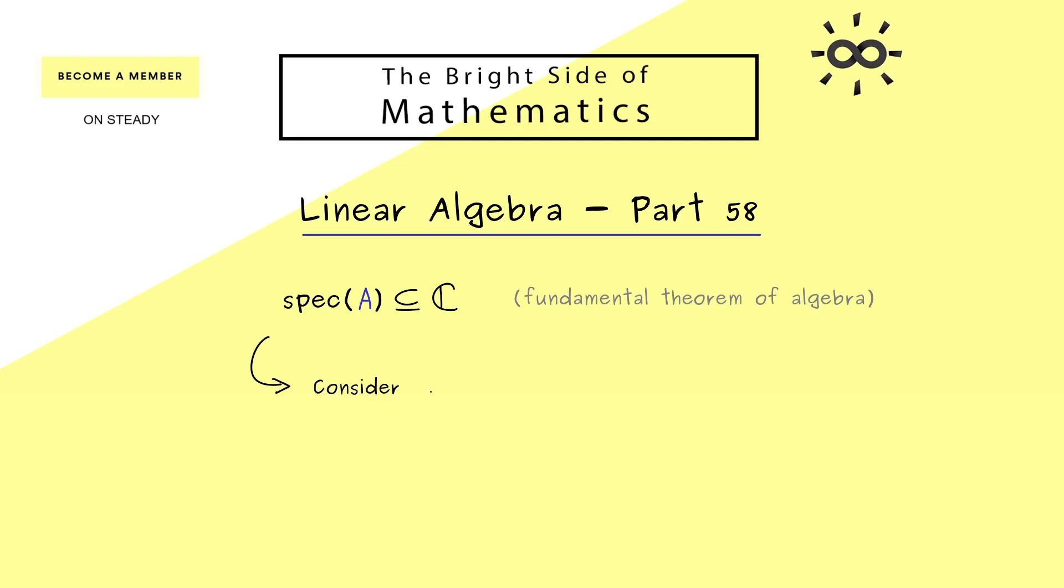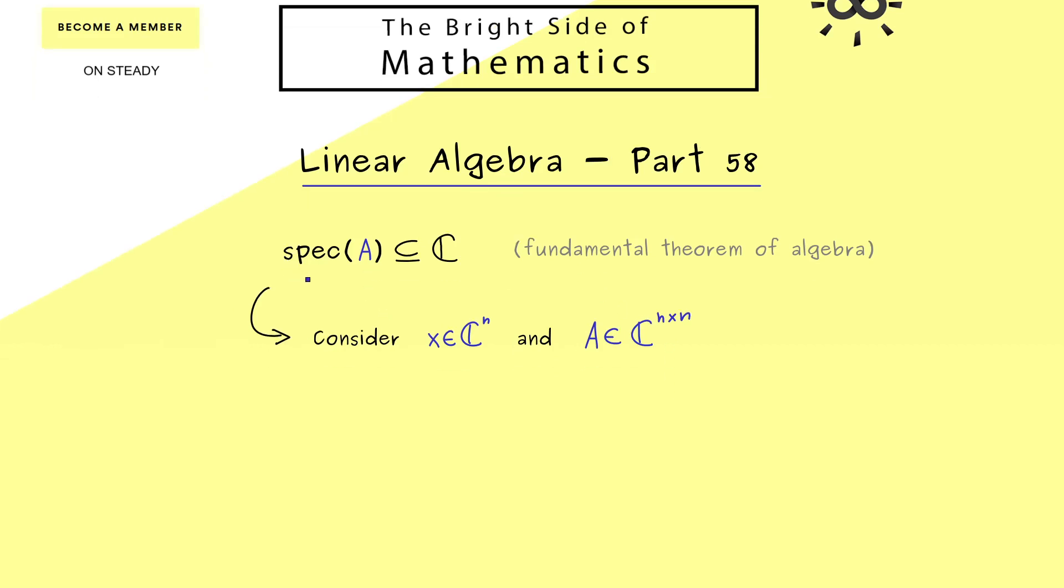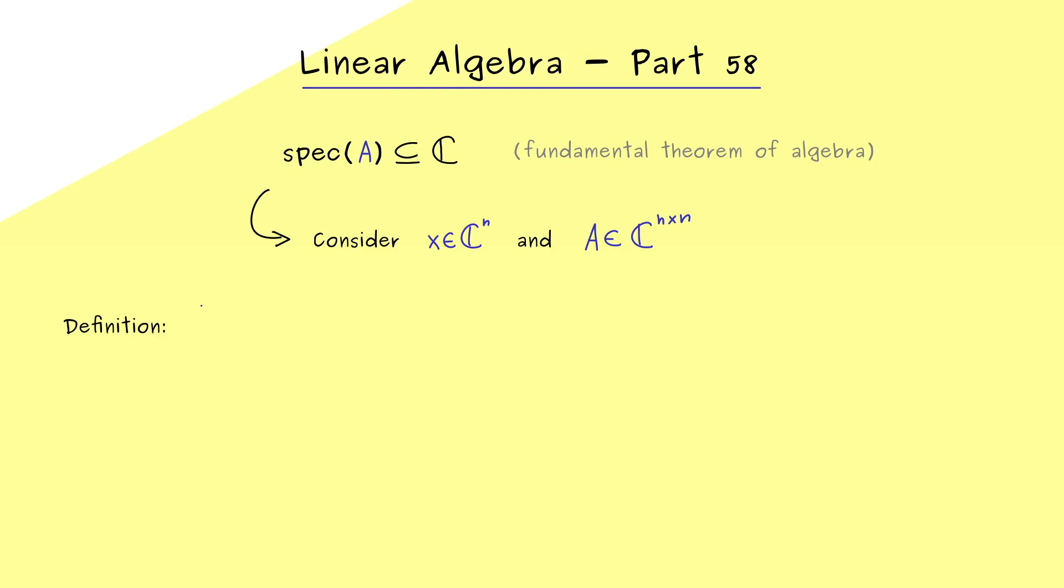Hence from now on we also want to consider vectors from C^n. Of course this is the same as R^n but now with complex numbers as entries. And exactly the same we will also do with matrices. So essentially nothing changes here in the definition, just the elements, the entries from matrices and vectors come now from a bigger number set. However with that choice our eigenvalue theory gets much better.